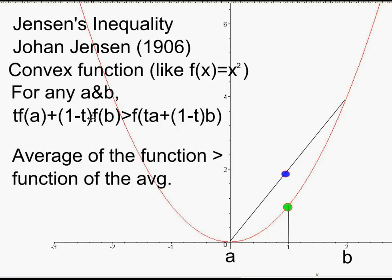Now, this technical formula here, let me just show you how this tells us that the average of the function is greater than the function of the average. Jensen made it more general. He said for any number t between 0 and 1. But let's ignore that. Let's just suppose t is a half. Let t equal 0.5. Then what do we get?